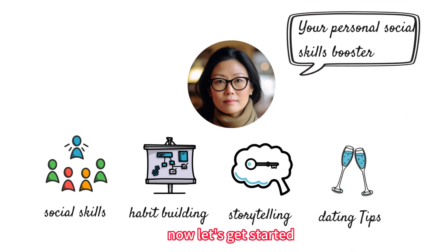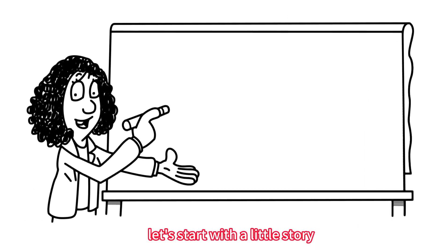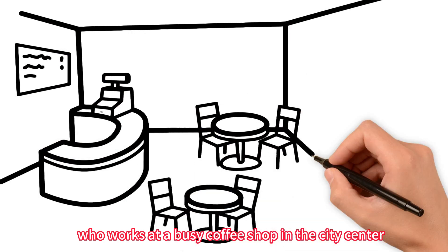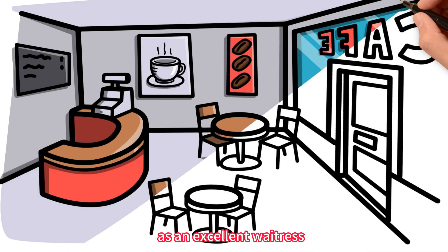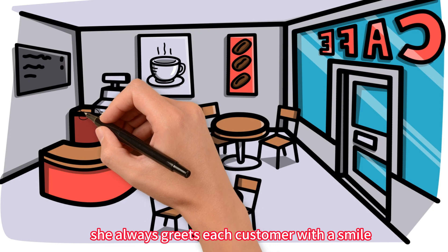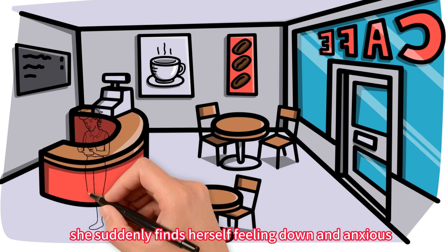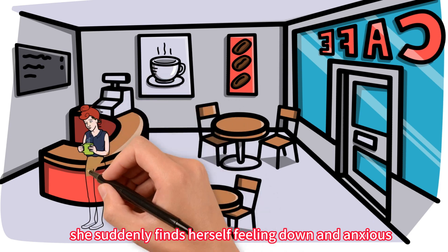Now, let's get started. Let's start with a little story. Kate is a cheerful girl who works at a busy coffee shop in the city center. As an excellent waitress, she always greets each customer with a smile. However, one day, she suddenly finds herself feeling down and anxious.